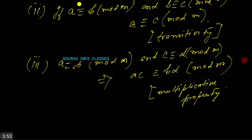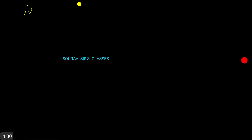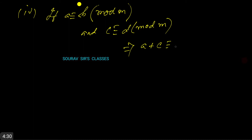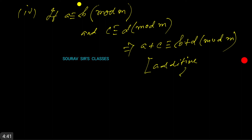Number 4 is the additive property: if a ≡ b (mod m) and c ≡ d (mod m), then a + c ≡ b + d (mod m). This is the additive property.